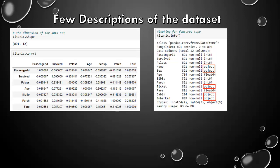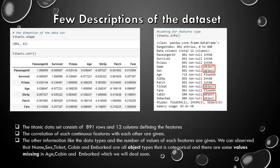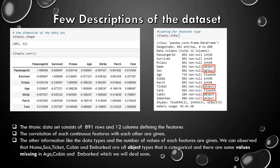Few descriptions of the dataset are given. We can see the Titanic dataset consists of 891 rows and 12 columns defining the features. The correlations of each continuous features are given with respect to other features. The other information like the data types and the number of values of each features are given. We can observe that name, sex, ticket, cabin, and embarked features are all object types, that is categorical in nature. And there are some missing values in age, cabin, and embarked which we will deal soon.